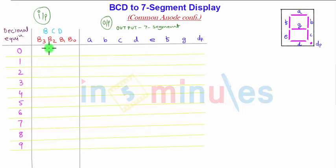0 will correspond to BCD 0000. 1 will correspond to 0001. Let me complete this table for you.